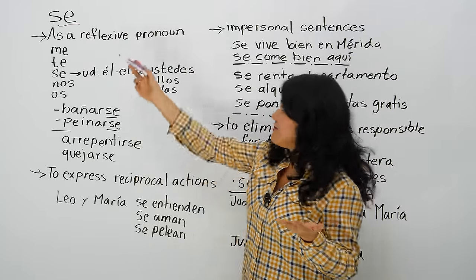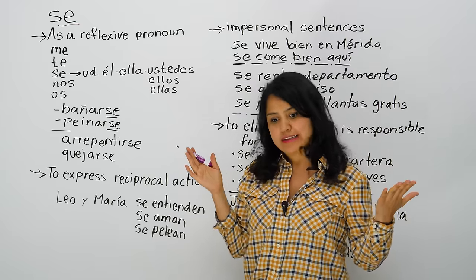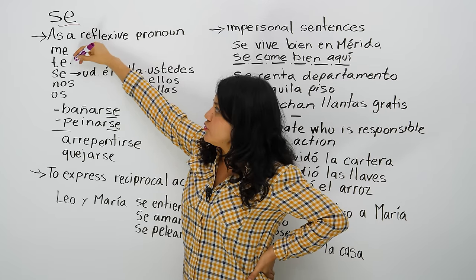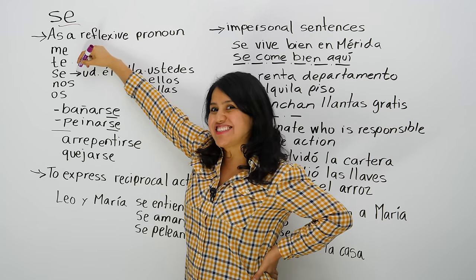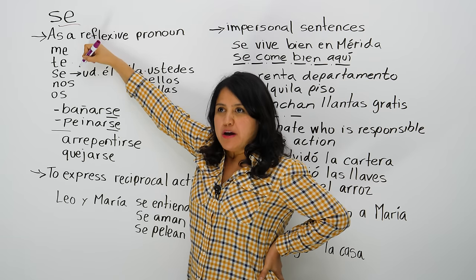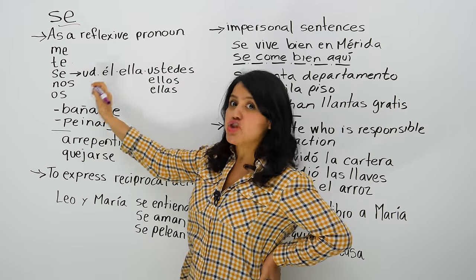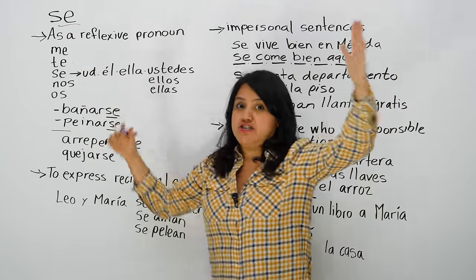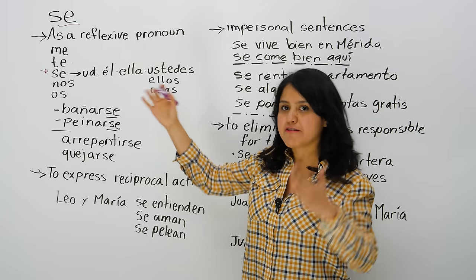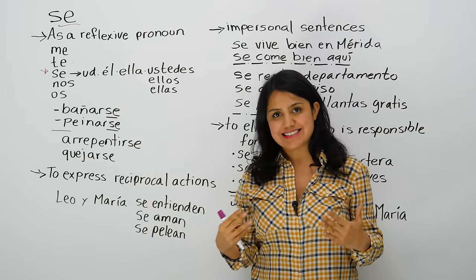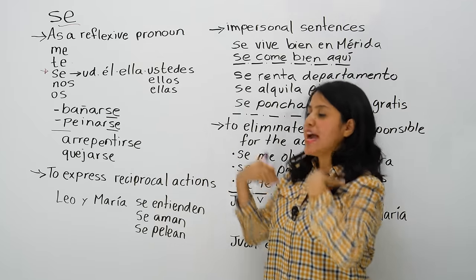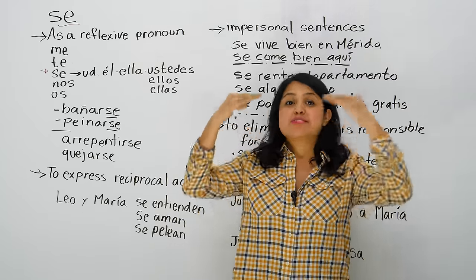We use it as a reflexive pronoun. What is a reflexive pronoun? You've probably seen it. It's when you say: yo me baño, tú te bañas, él se baña, usted se baña, ellos se bañan, ellas se bañan, ustedes se bañan, nosotros nos bañamos, vosotros os bañáis if you live in Spain. Here you use 'se' as a reflexive pronoun with reflexive verbs, which means the subject and the object are the same — you are the receiver of that action.